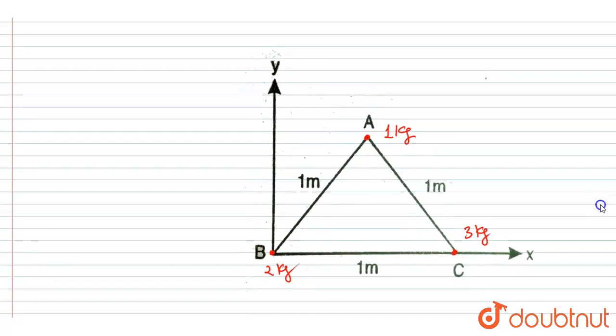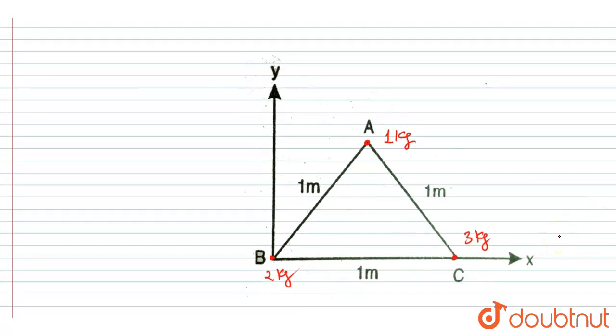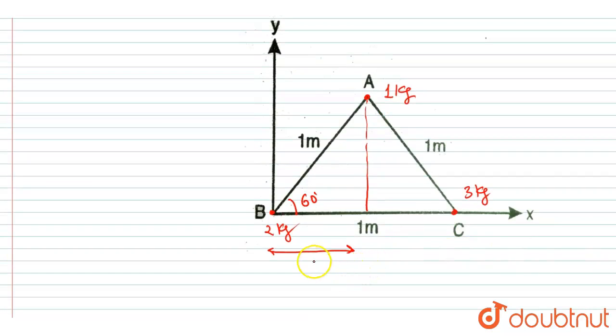So first of all, let's write down the location of center of mass of these three particles. If you see, this angle is 60 degrees, right? So this length will be 1 cos 60 degrees, that will be half, and this length will be 1 sin 60 degrees, that is root 3 by 2.